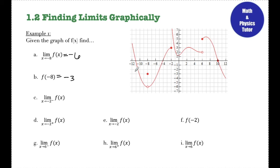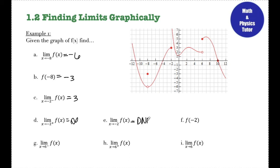Part c: the limit as x approaches negative 2 from the left. Here's x equals negative 2. Approaching from the left-hand side, the y value is 3. However, if I look at the limit as x approaches negative 2 from the right, I follow along on my graph and I can see that as x is approaching negative 2 from the right, my function is shooting up to positive infinity. Since this is a left- and right-hand limit, I can write positive or negative infinity because this is just describing the behavior of the graph. However, since I'm ending up in two different spots — 3 from the left and positive infinity from the right — the limit as x approaches negative 2 does not exist. This is a DNE limit.